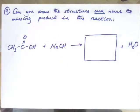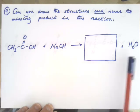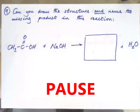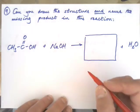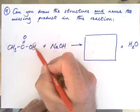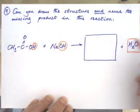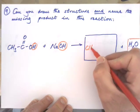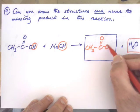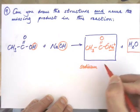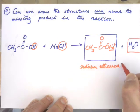Question number nine. Can you draw the structure and name the missing product in this reaction? We have ethanoic acid plus sodium hydroxide giving our missing product plus water. The acid donates an H⁺ ion and the base accepts it, forming water. The sodium and the rest of the ethanoate molecule join together to give this structure — and it is called sodium ethanoate.